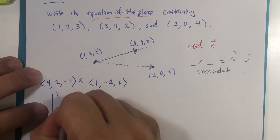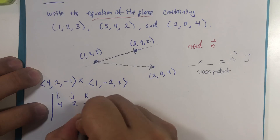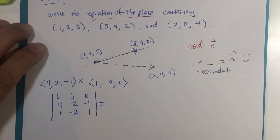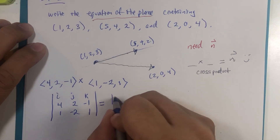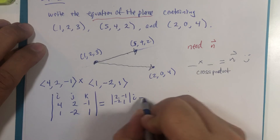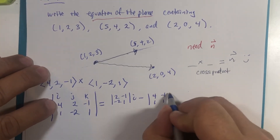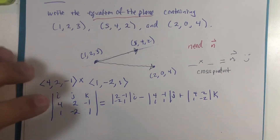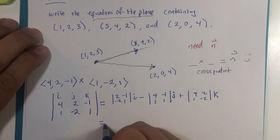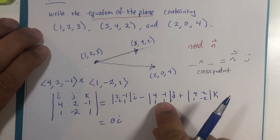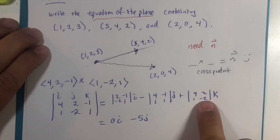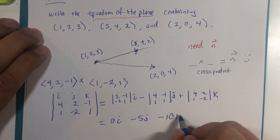Setting up the cross product with the determinant: i, j, k in the first row; 4, 2, -1 in the second; 1, -2, 1 in the third. Computing: i times (2·1 minus -1·-2) = (2 minus 2) = 0; minus j times (4·1 minus -1·1) = (4 minus -1) = 5, so negative 5j; plus k times (4·-2 minus 2·1) = (-8 minus 2) = -10. The normal vector is (0, -5, -10).